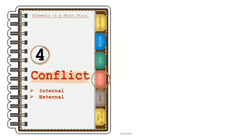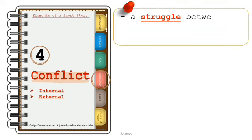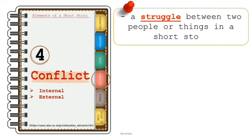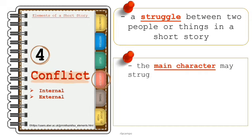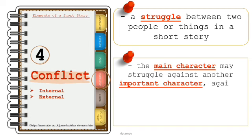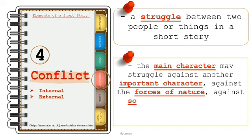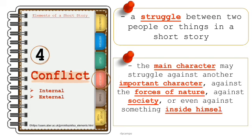The fourth element of a short story is conflict. It is a struggle between two people or things in a short story. The main character may struggle against another important character, against the forces of nature, against society, or even against something inside himself or herself.